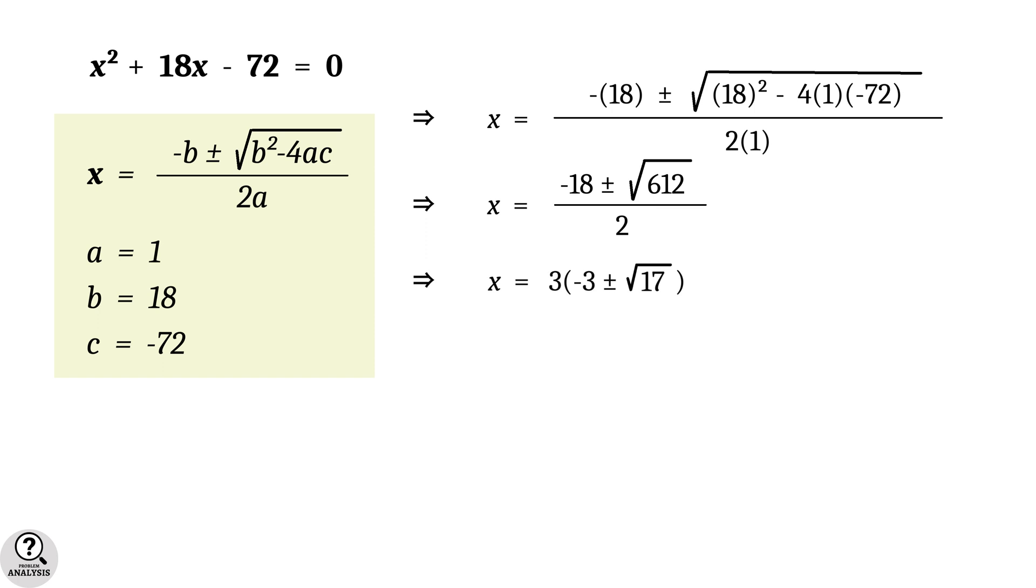Substitute these values and simplify. Finally, x = 3(-3 ± √17). But since x is a length, it must be positive. Therefore, x = 3(-3 + √17) = 3√17 - 9, which is approximately 3.36932 units.